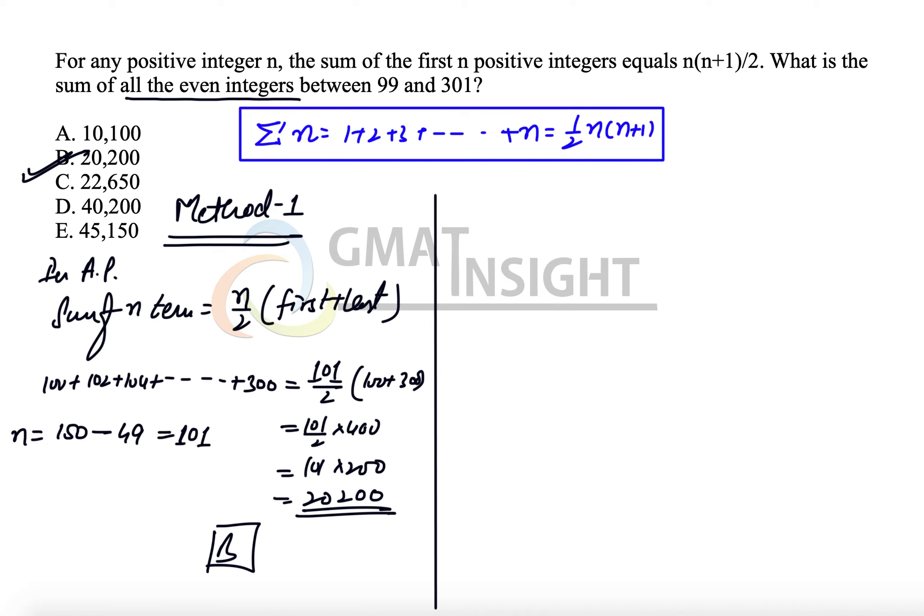We can also learn it using Method 2. In Method 2, we are going to use the property that we have been given, which is sum of n consecutive numbers.